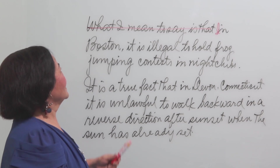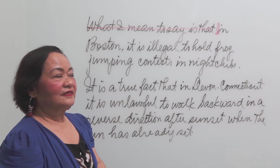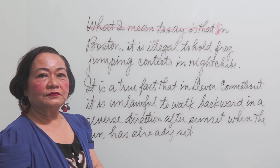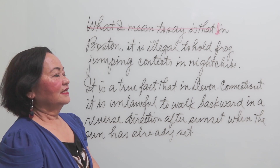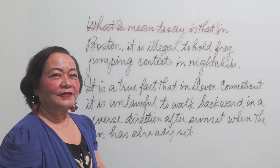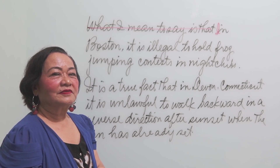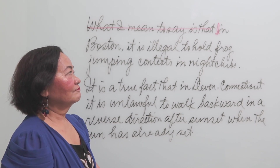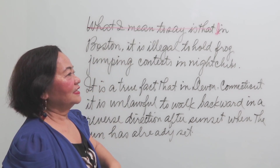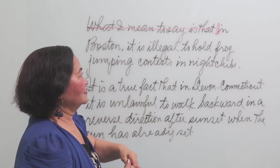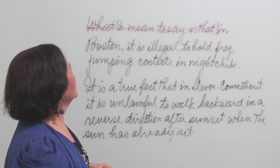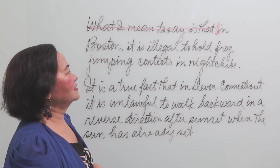Let's have another practice. Original: 'What I mean to say is that in Boston it is illegal to hold frog jumping contests in nightclubs.' Notice that it is unnecessary to put this introduction 'what I mean to say is that.' Revised: 'In Boston it is illegal to hold frog jumping contests in nightclubs.' The introduction is lengthy and unnecessary.